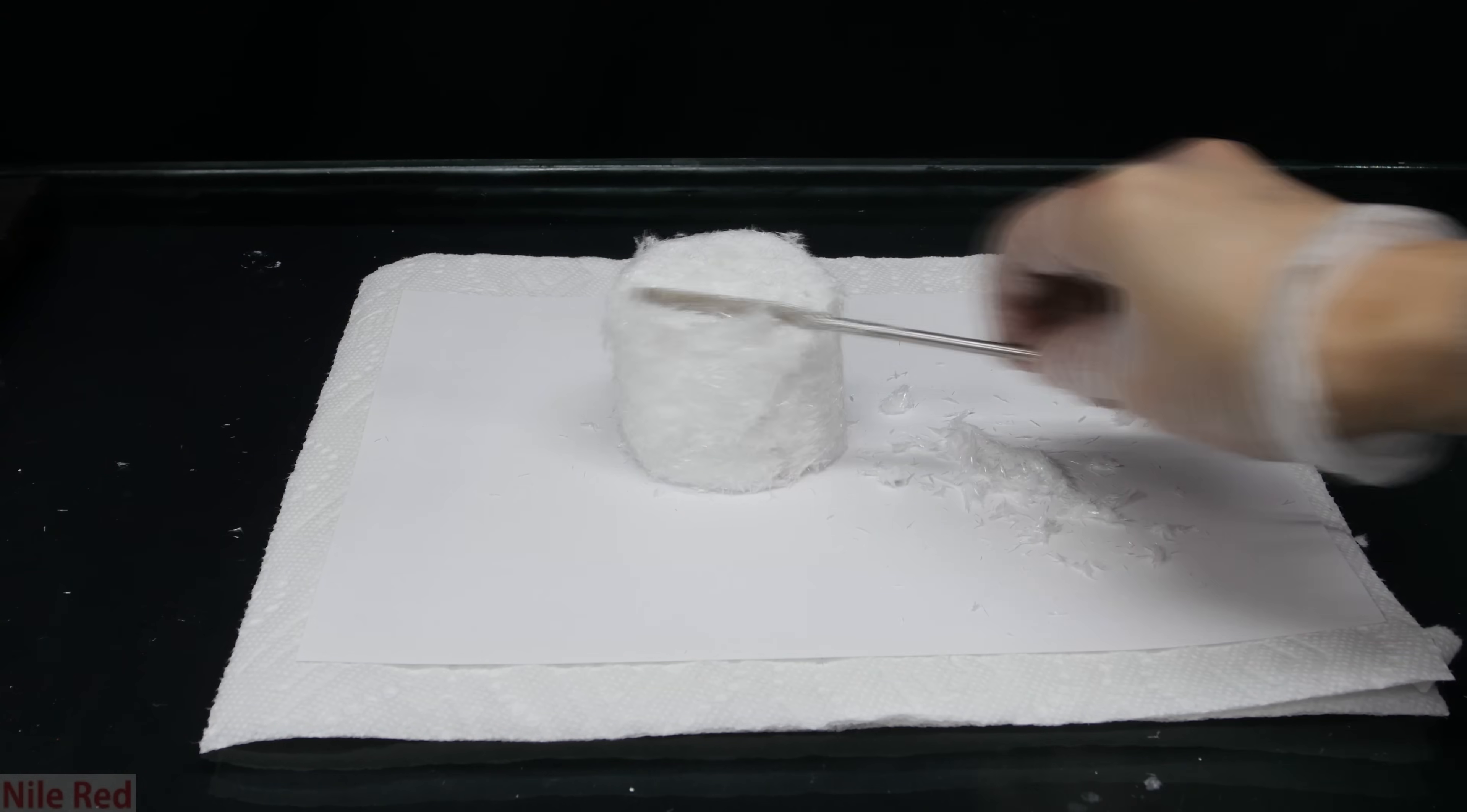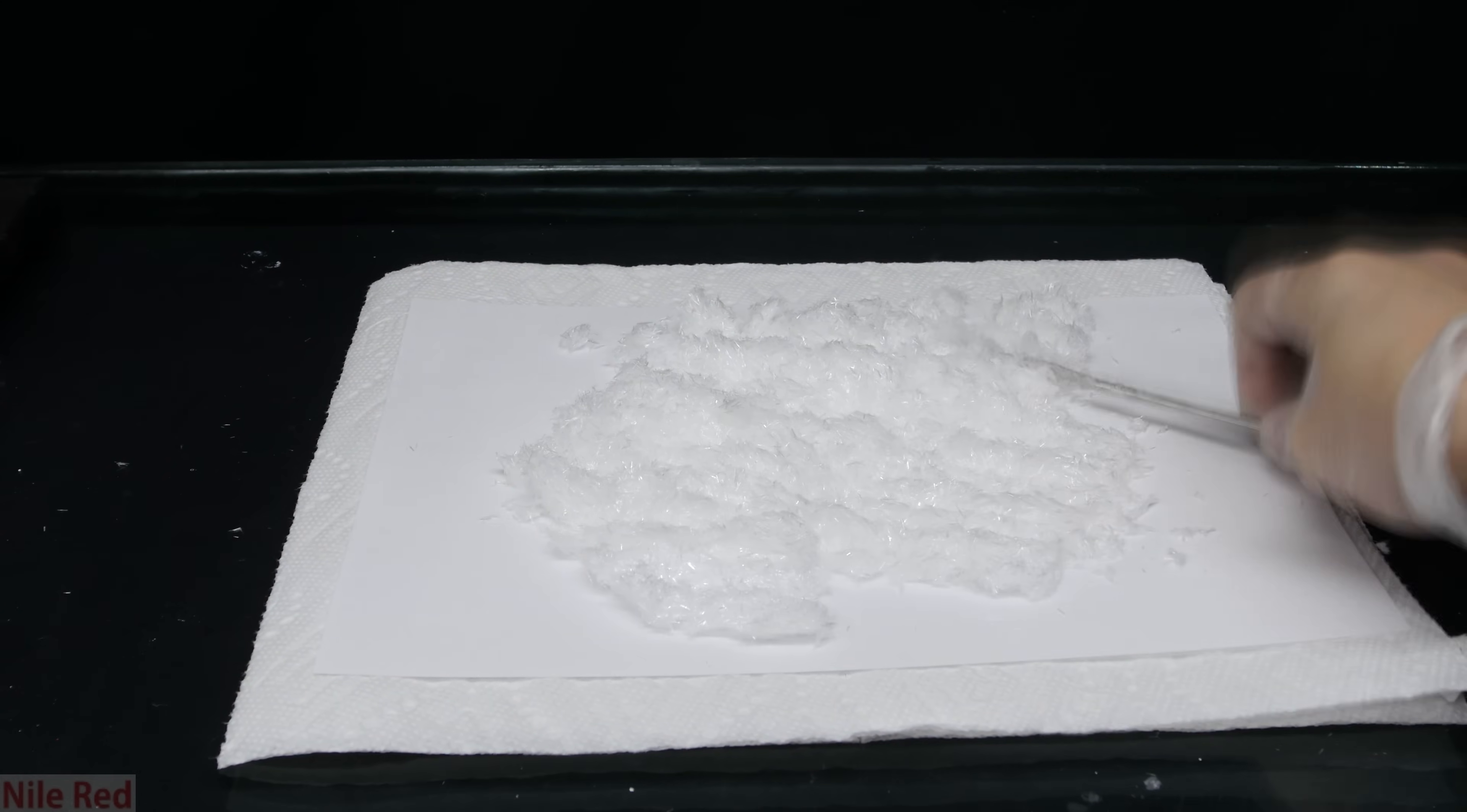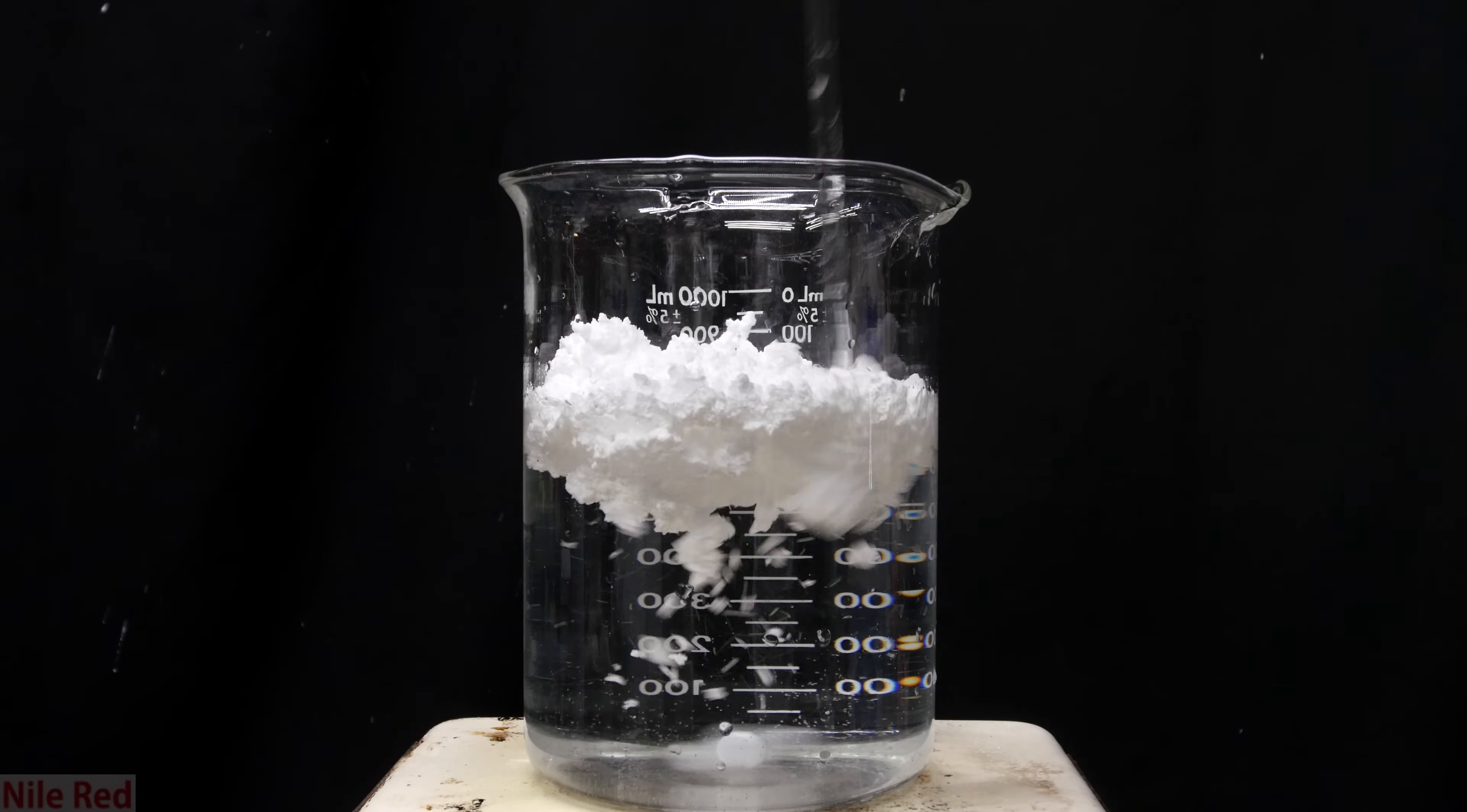After I made the benzoic acid in this video, I actually did proceed on to make the denatonium benzoate, and that will be posted in a future video. Besides making denatonium benzoate, it does have several other uses chemistry-wise. I'm not so much interested in a lot of the other uses it has, but I want to use it to make something called benzoyl chloride.